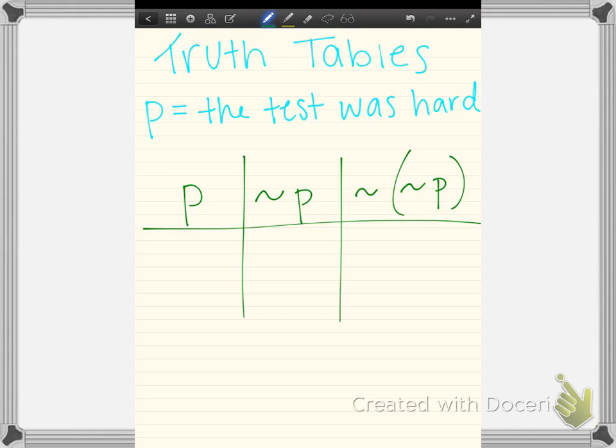Truth tables help us talk about our logical statements, categorize them better, and figure out information about the propositions. Here you can see that I have written P equals the test was hard. P could represent any proposition that I want it to be. I'm just using that as an example.